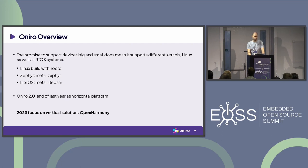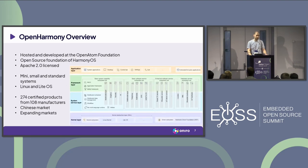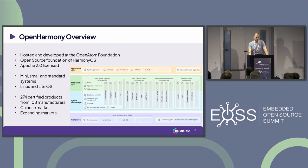This year, the focus is very much on having a vertical solution. Now that we have the horizontal platform, we want to go deeper, and that is where Open Harmony comes in. If you haven't heard about Open Harmony, it's a project hosted at the Open Atom Foundation in China. It's the open source foundation of HarmonyOS, which is a proprietary operating system from Huawei. It is Apache 2.0 licensed, so there's an easy way to transition code in and out. They have a notation of mini, small, and standard systems.